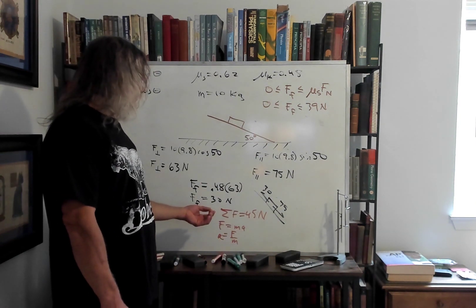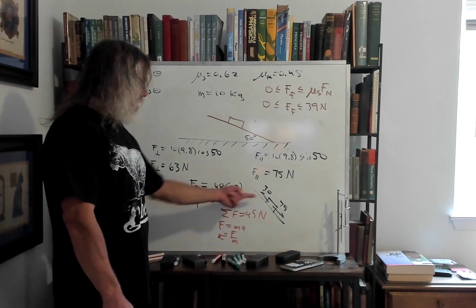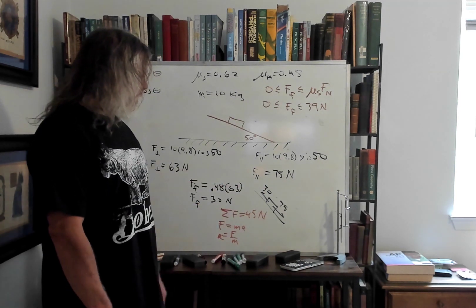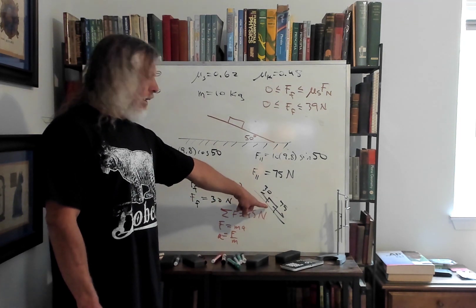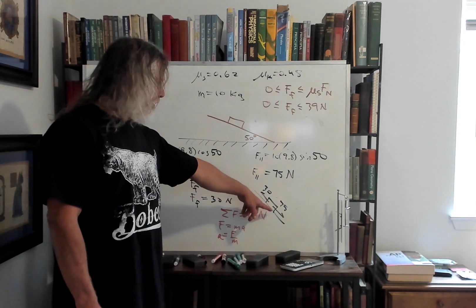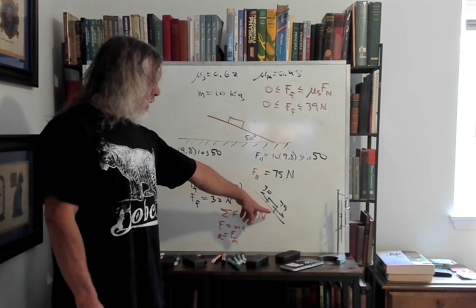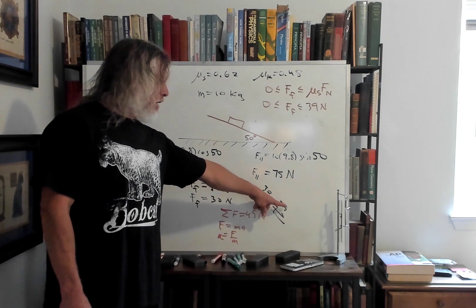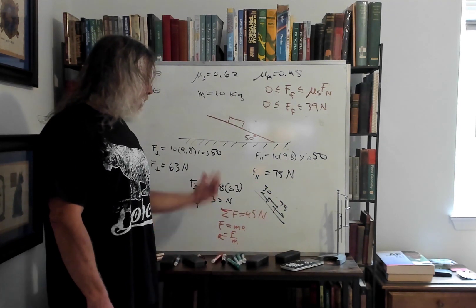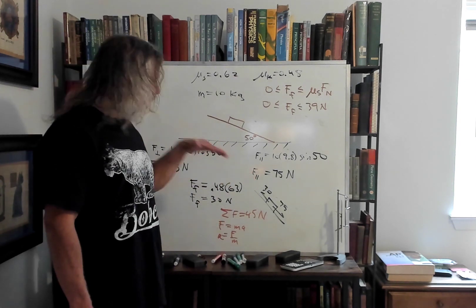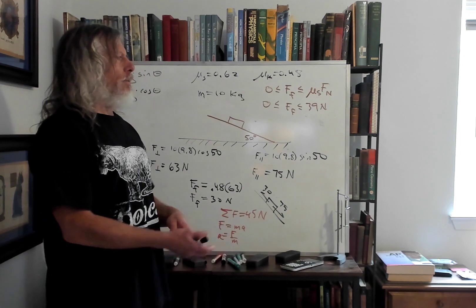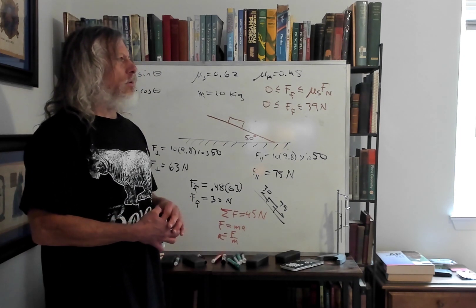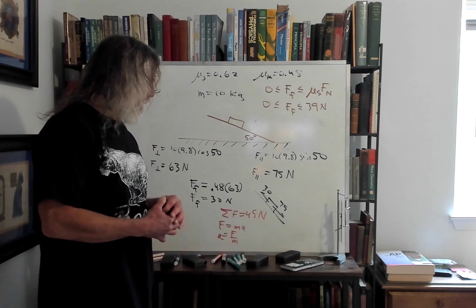And then when we see the force of kinetic friction, it's 30 newtons the opposite direction. So using the second law, Newton's second law, F equals MA, we get the net force, 75 minus 30, 45. So there's a force of 45 newtons down the incline plane, and that's approximately 11 pounds down the incline.